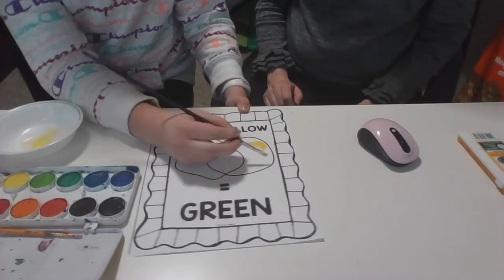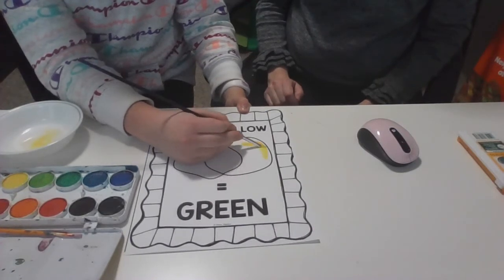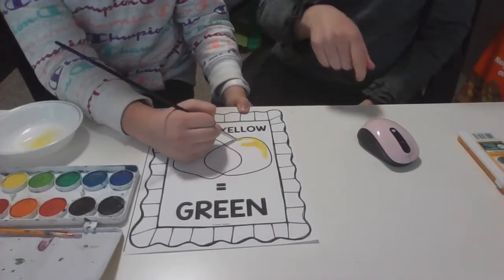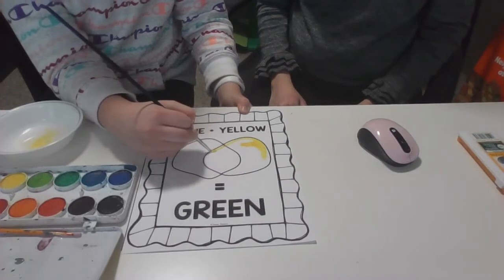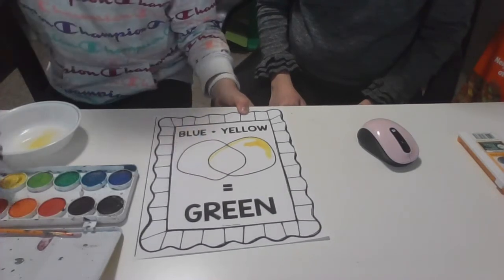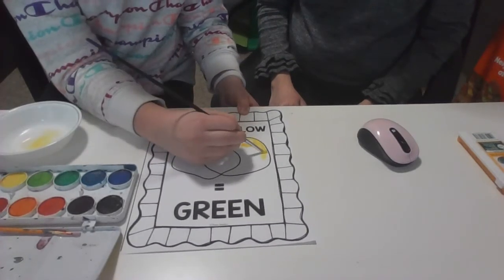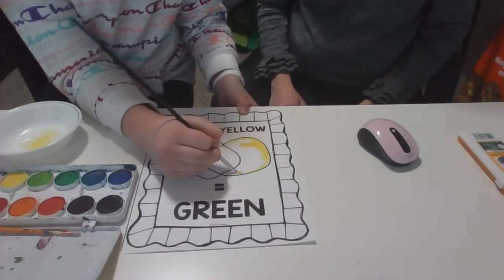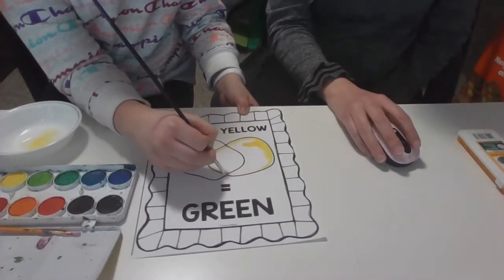All right, so first you're going to paint the yellow and go all around the whole circle. Can you outline the whole circle that you're going to paint yellow? See how it crisscrosses with the blue circle, but that's okay. You're going to take your paintbrush and color the whole thing yellow.